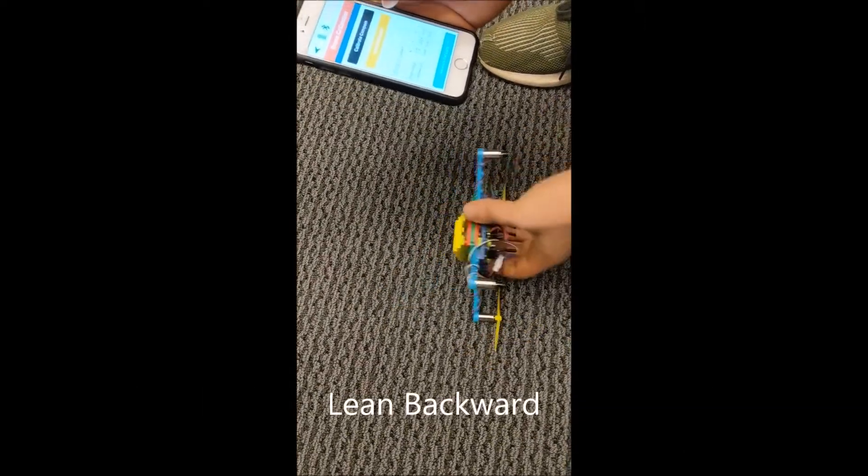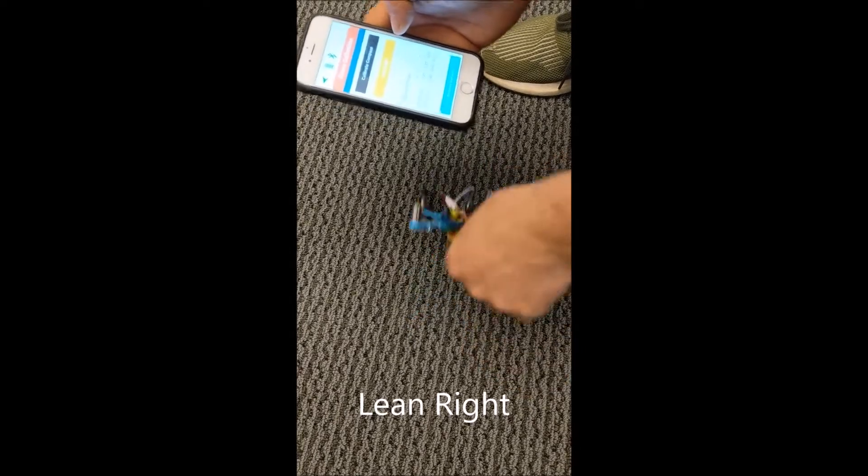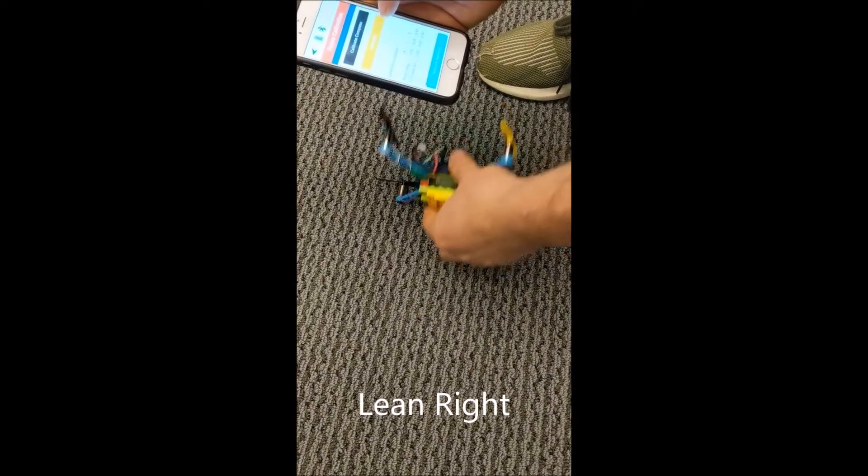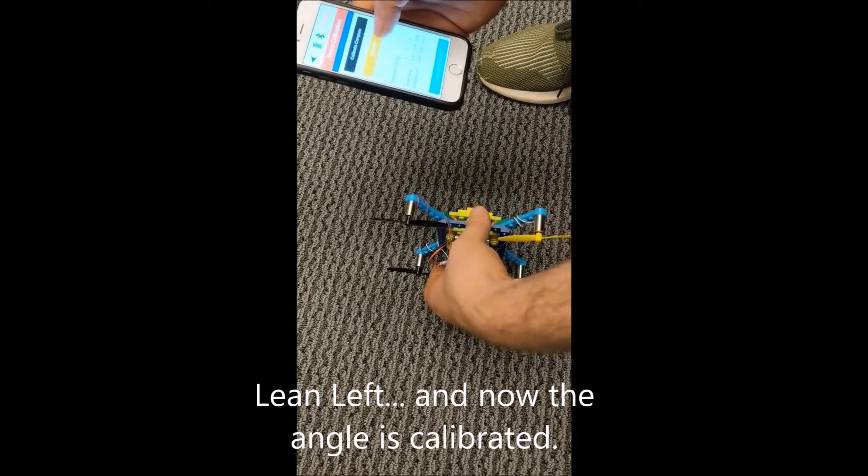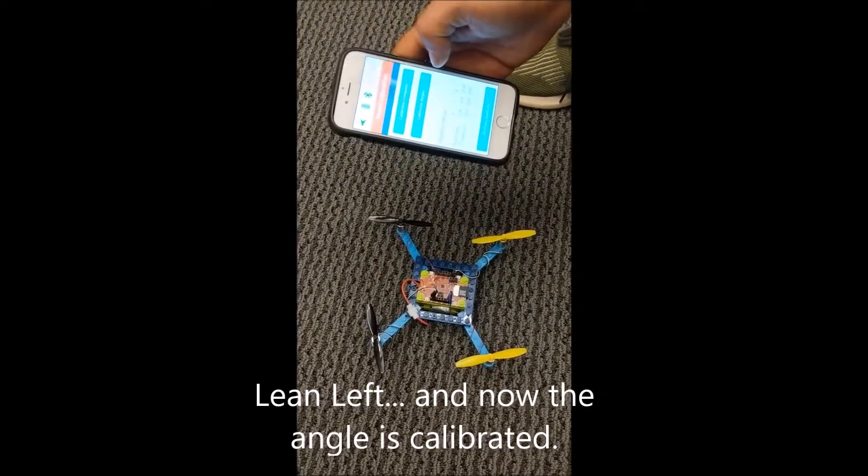Lean backward. Lean right. Lean left. And now the angle is calibrated.